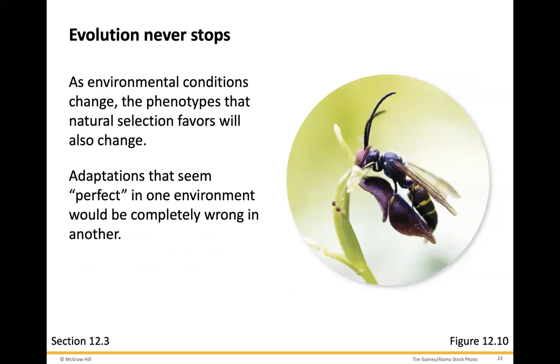Genotype (G-E-N-O-T-Y-P-E) is a term used to describe the sequence of DNA. Phenotype is the expressed version of the gene. For example, you have a gene that's going to dictate that you have blue eyes in the DNA — that's the genotype. The fact that you have blue eyes is the expressed version of the genotype. So the blue eyes feature would be the phenotype.